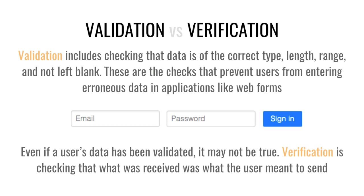In HCI and computer science, if a user makes a mistake at the validation stage, it's not their fault — it's our fault. If we wanted a seven-digit number and allowed them to enter six, that's our fault for letting them through.